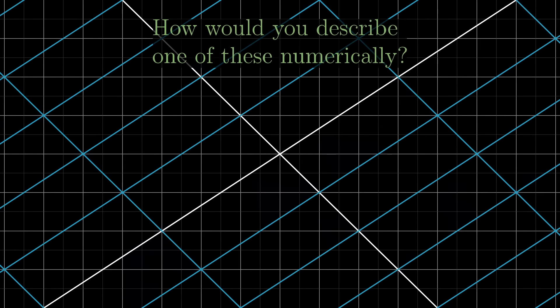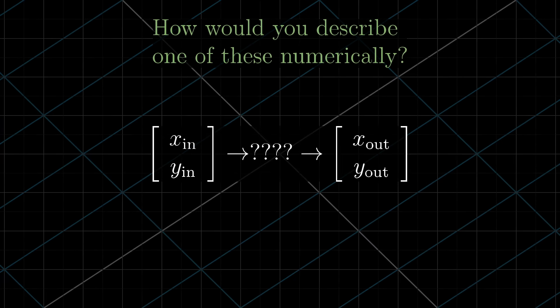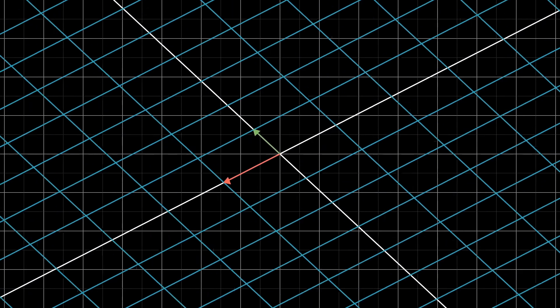Some linear transformations are simple to think about, like rotations about the origin. Others are a little trickier to describe with words. So how do you think you could describe these transformations numerically? If you were, say, programming some animations to make a video teaching the topic, what formula do you give the computer so that if you give it the coordinates of a vector, it can give you the coordinates of where that vector lands? It turns out that you only need to record where the two basis vectors, i-hat and j-hat, each land, and everything else will follow from that.